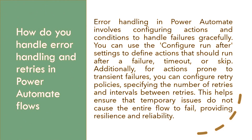How do you handle error handling and retries in Power Automate flows? Error handling in Power Automate involves configuring actions and conditions to handle failures gracefully. You can use the "Configure run after" settings to define actions that should run after a failure, timeout, or skip. Additionally, for actions prone to transient failures, you can configure retry policies, specifying the number of retries and intervals between retries. This helps ensure that temporary issues do not cause the entire flow to fail, providing resilience and reliability.